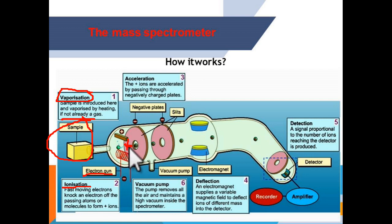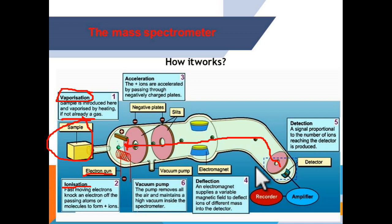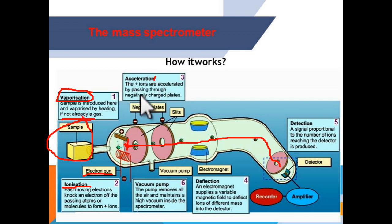After bombardment the atom becomes an ion, and we need to force the ion to move through the tube until it reaches the detector. This is done in the acceleration chamber. The ion is accelerated by passing through a negatively charged plate, which forces it to move faster through the instrument.